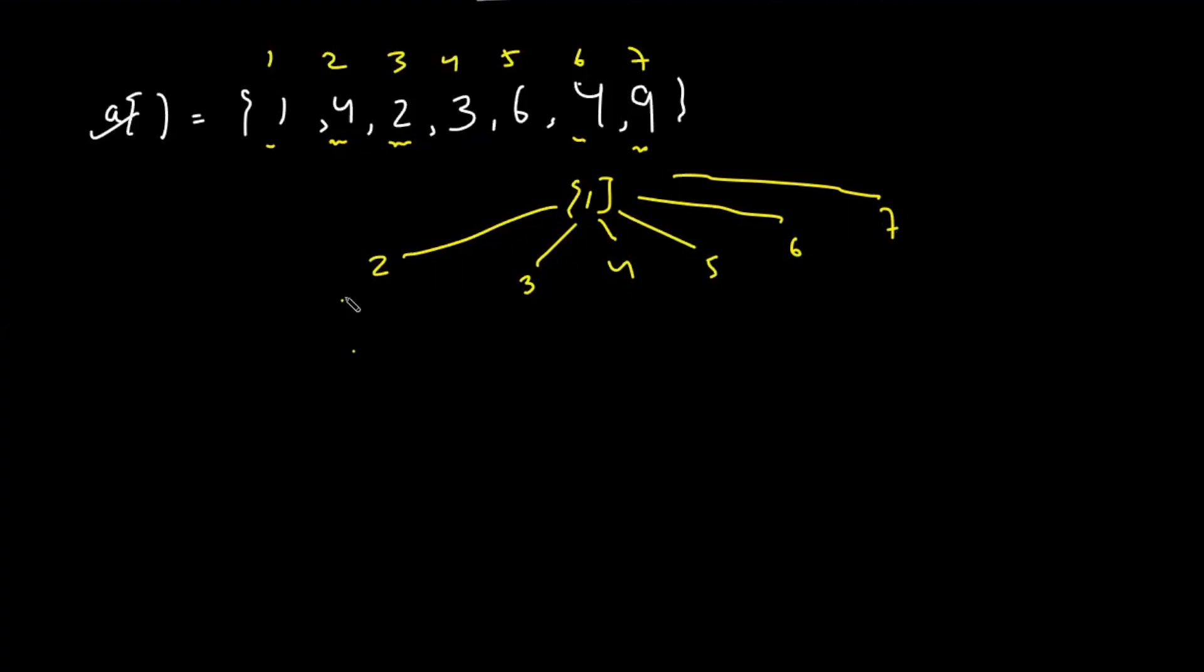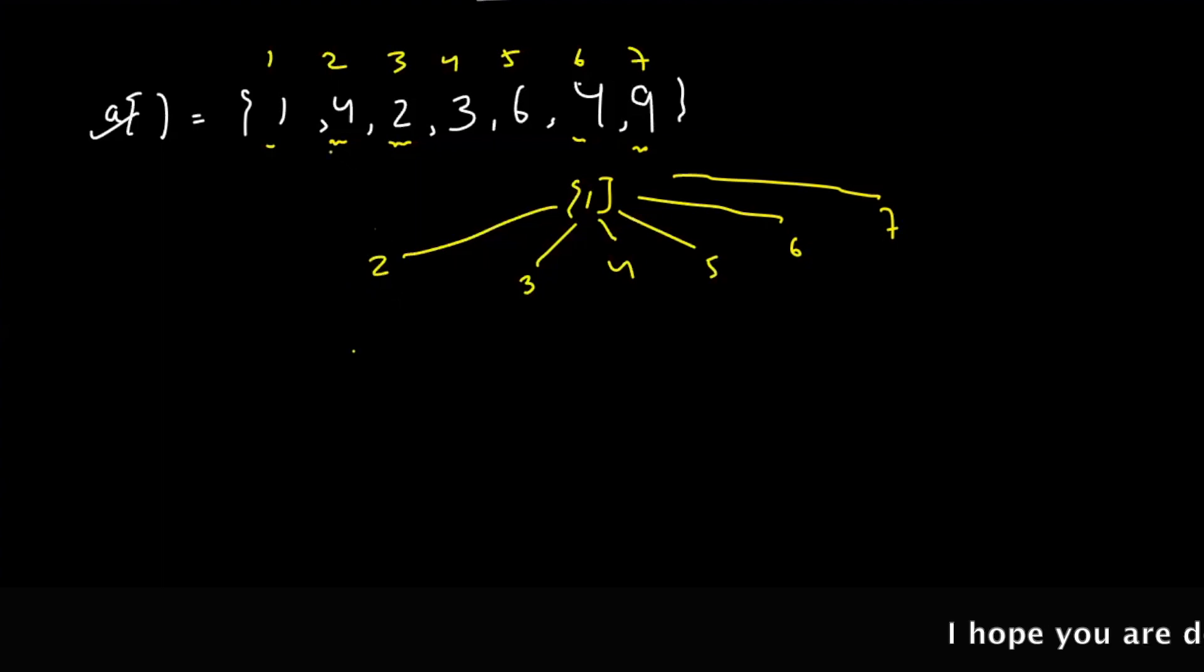From 2, where can we move? We can move to 4 because 4 is the multiple. We can also move to 6. So there are two possible movements from 2. So let's check. Can it move to 4? No, it cannot move. Why?